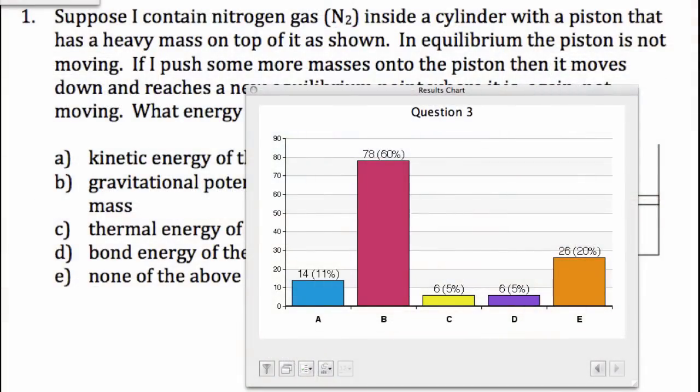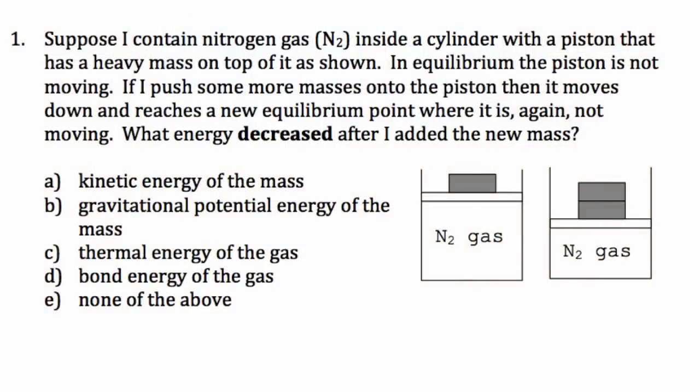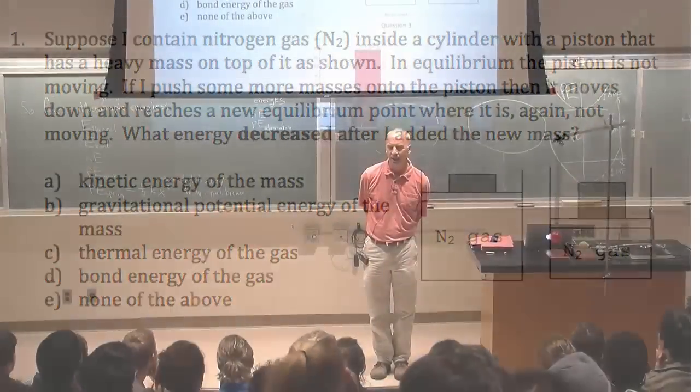Okay, so the bulk of you are saying gravitational potential energy, some of you saying other things scattered around. Did the gravitational potential energy of the mass decrease? Is that one of the answers? How would I know if it decreased? Because the height went down. The height decreased, so the gravitational potential energy of the mass decreased. Anyone have a problem with that one?